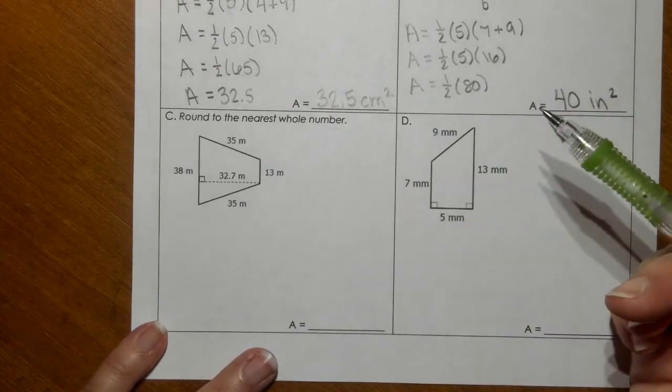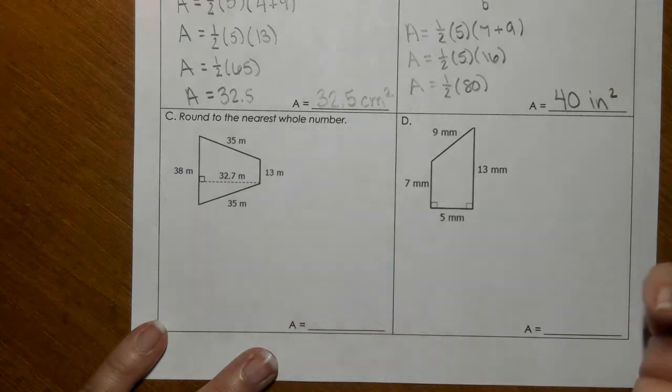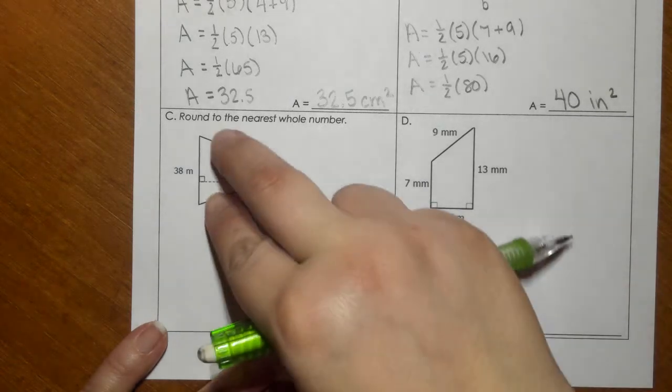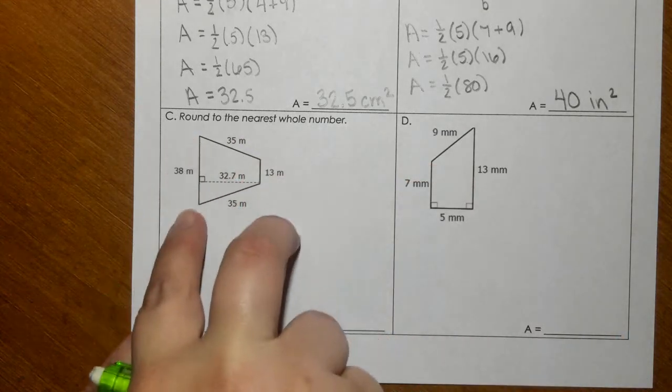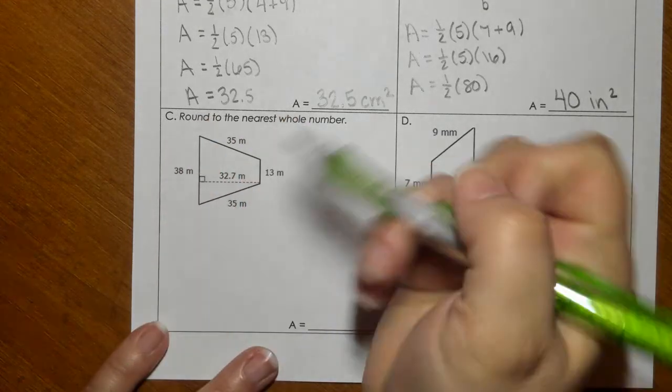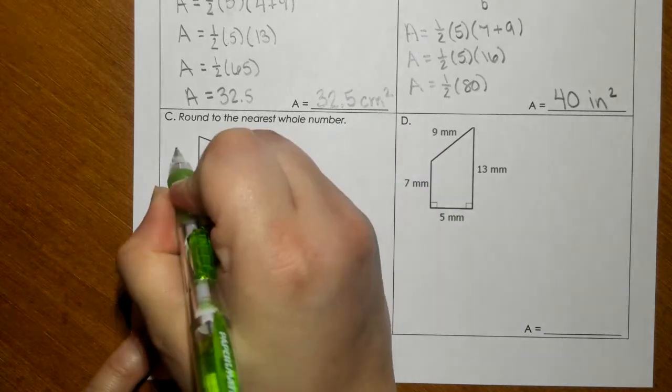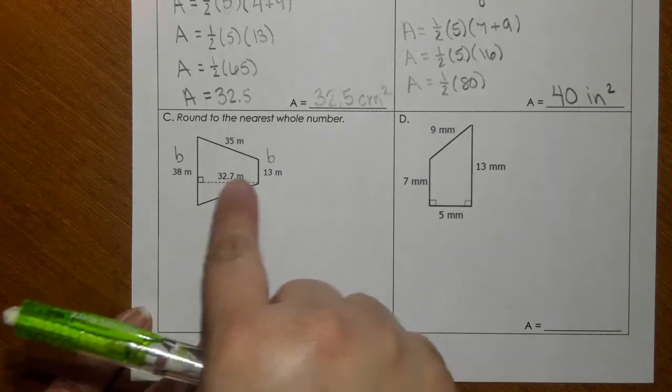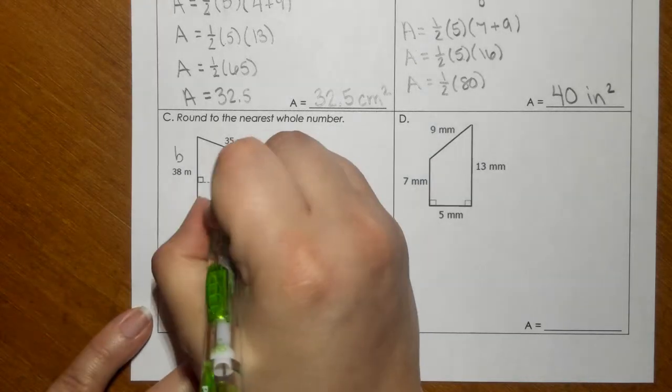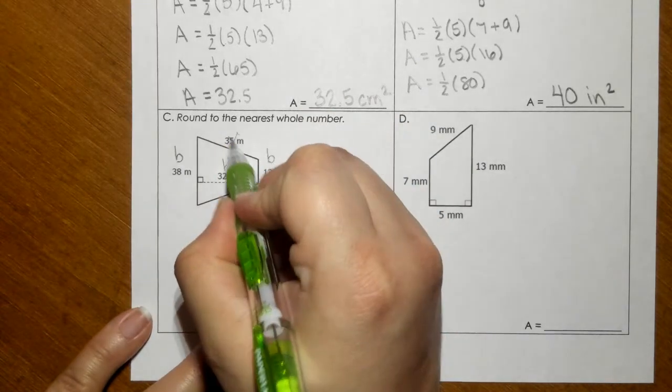Like, which two numbers here would represent your bases? Eventually, these two right here would come together and meet. So that means that 38 and 13 are going to be your bases. Your height has to be the distance between the two bases, so that's going to be this right here, leaving this to be extra.